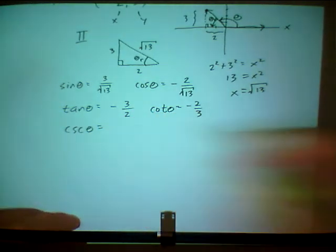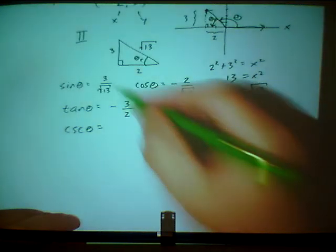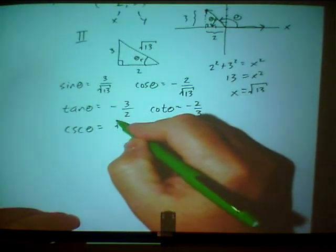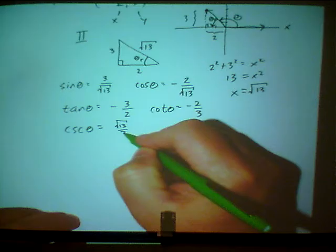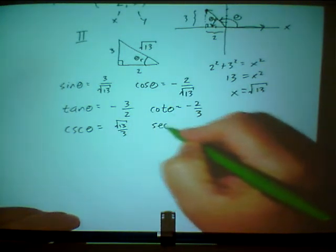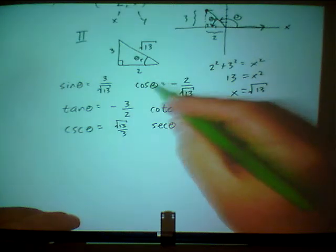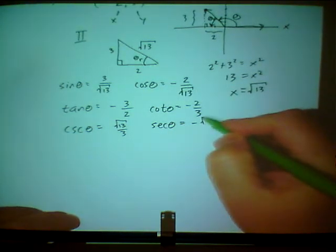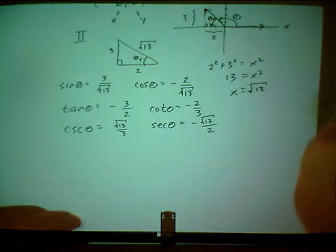Cosecant of theta, reciprocal of the sine, square root of 13 over 3. The secant of theta, reciprocal of the cosine, negative square root of 13 over 2. And there we go.